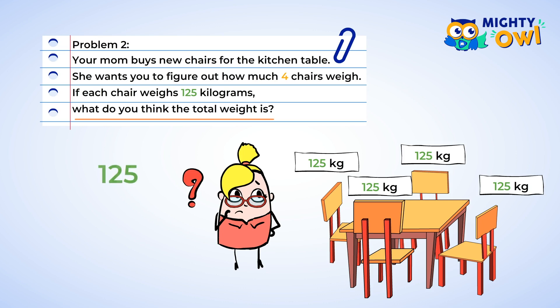So, 125 kilograms multiplied by four chairs. First, we start with the ones place. Five multiplied by four is 20. We put a zero in the ones place of our answer, and write a two above the two in our problem.